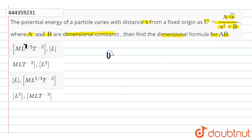Here the value of potential energy U is A root x, root x is nothing but x to the power 1 by 2 divided by x square plus B, where x is distance and A and B are dimensional constants. So here from this equation, we can say that the dimension of B are similar to that of the dimension of x square.